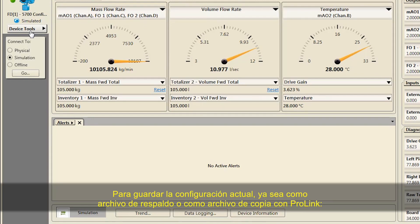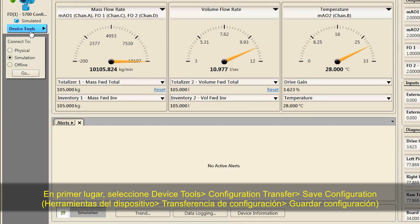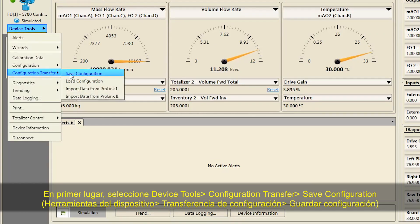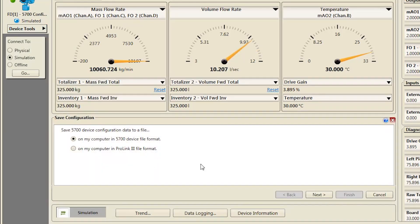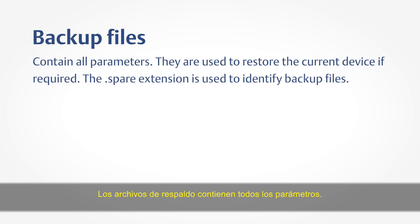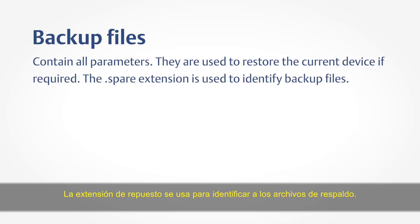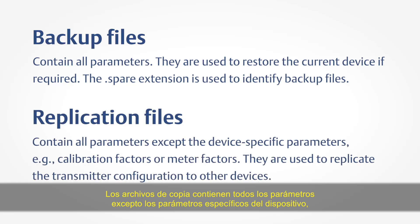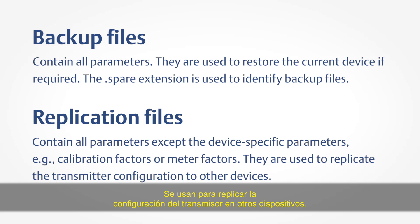To save the current configuration as either a backup file or a replication file using ProLink: first, select Device Tools, Configuration Transfer, Save Configuration. Second, choose Backup or Replicate File. Backup files contain all parameters and are used to restore the current device if required — the .spare extension is used to identify backup files. Replication files contain all parameters except device-specific parameters, such as calibration factors or meter factors, and are used to replicate the transmitter configuration to other devices.